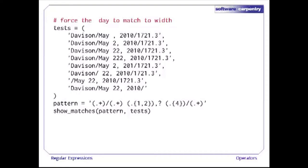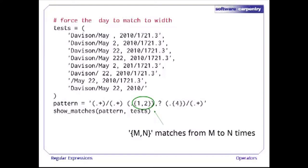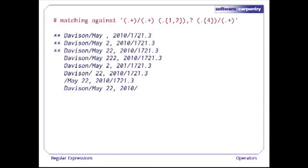We're expecting four digits for the year and allowing one or two digits for the day. The expression {m,n} matches a pattern from m to n times. When we run this pattern against our test data, we see that three records match. May 2nd and May 22nd make sense, but why does 'May' with no date at all match this pattern?